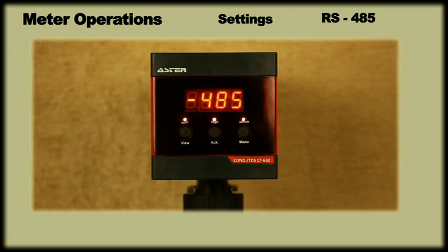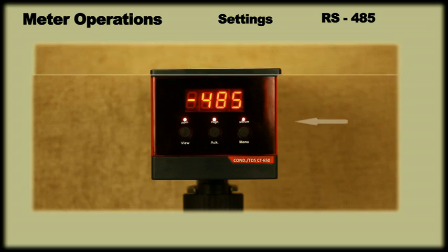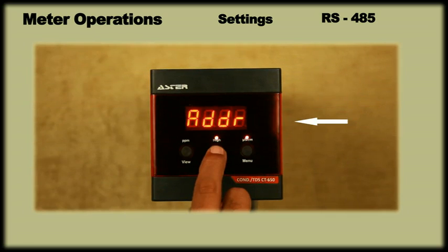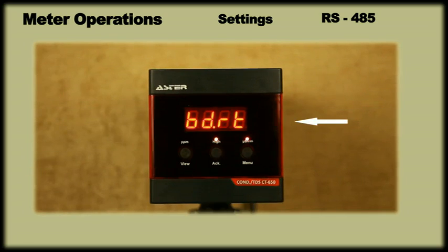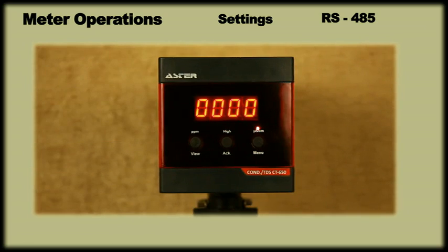Let us now understand the settings for RS-485. For meters with RS-485 output, only after setting the device ID and the baud rate, one would be able to communicate with the instrument. Let us understand how to do these settings.